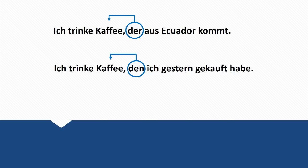Let's compare these two sentences. 'Ich trinke Kaffee, der aus Ecuador kommt' — der is the subject of that clause; the coffee comes from Ecuador, the coffee is the active part. In the second sentence, 'Ich trinke Kaffee, den ich gestern gekauft habe' — the coffee is not the active part anymore. I was the one who bought the coffee: Ich habe den Kaffee gekauft. I had the active part, and the coffee is the direct object.